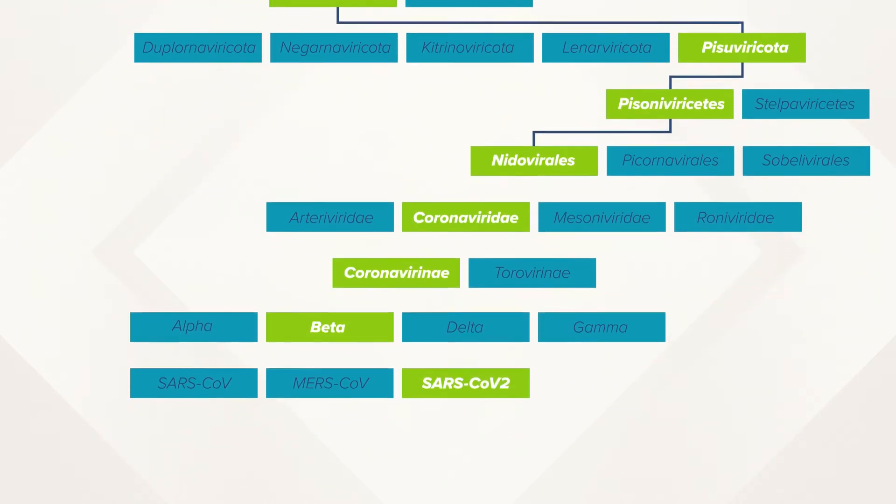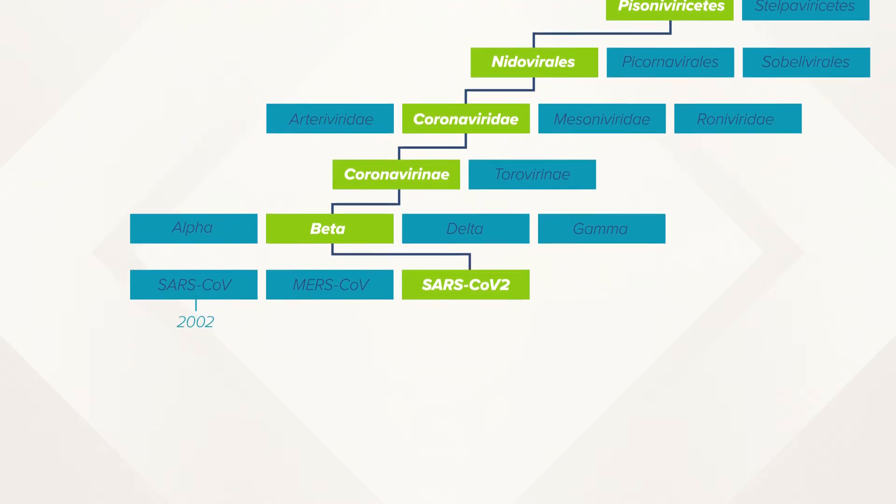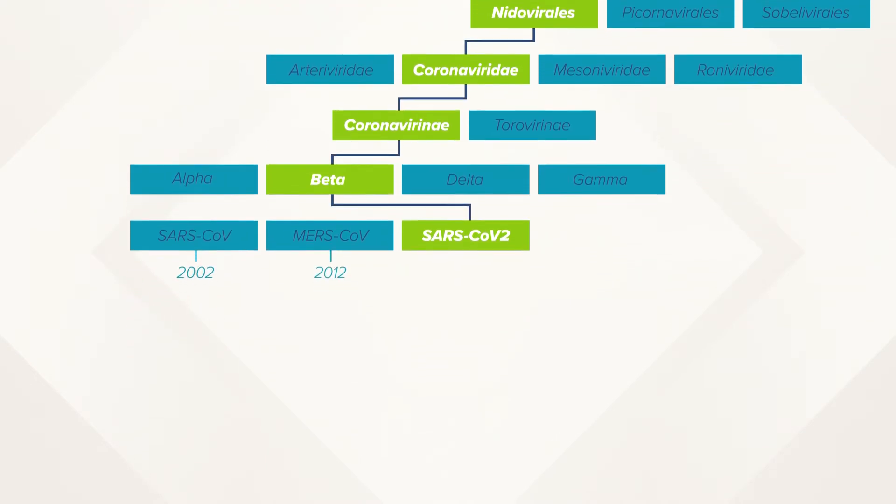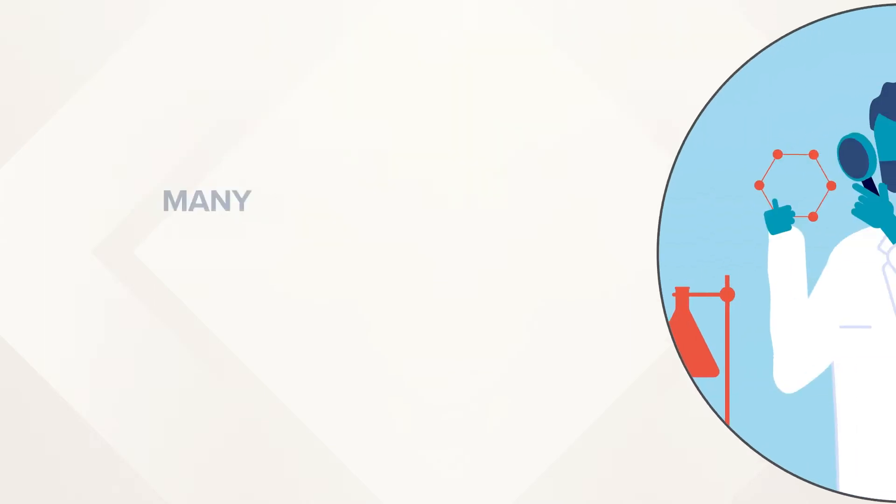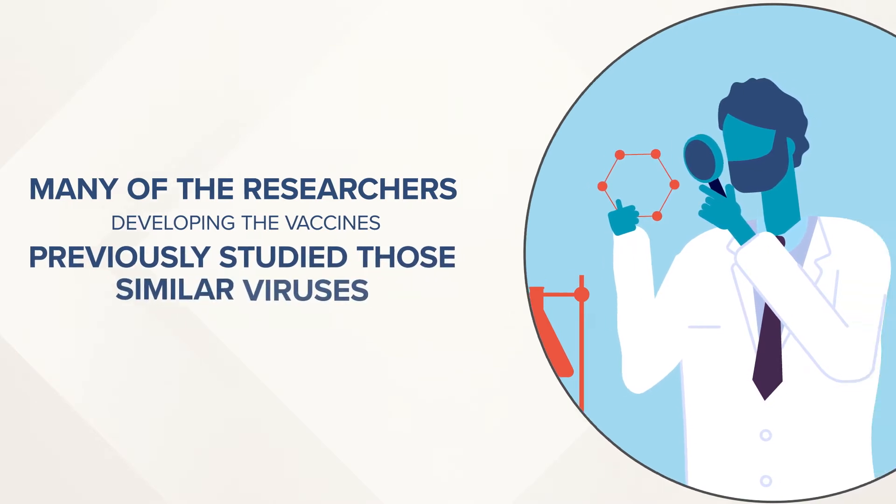That's because COVID-19 comes from a family of viruses, including the SARS coronavirus of 2002 and the MERS coronavirus of 2012. Many of the researchers who are developing the COVID-19 vaccines had previously studied those similar viruses.